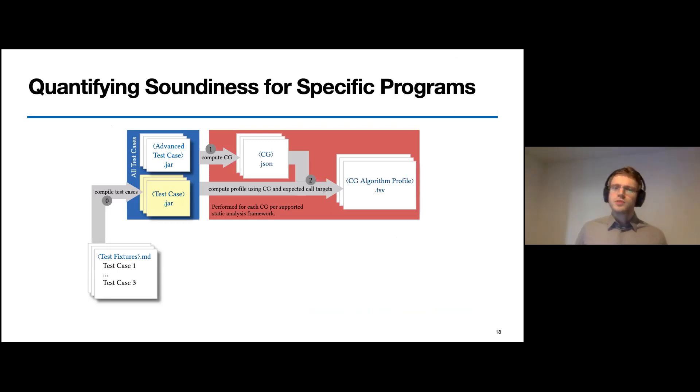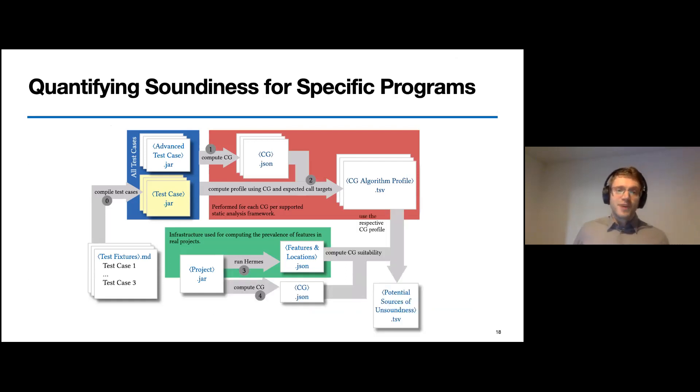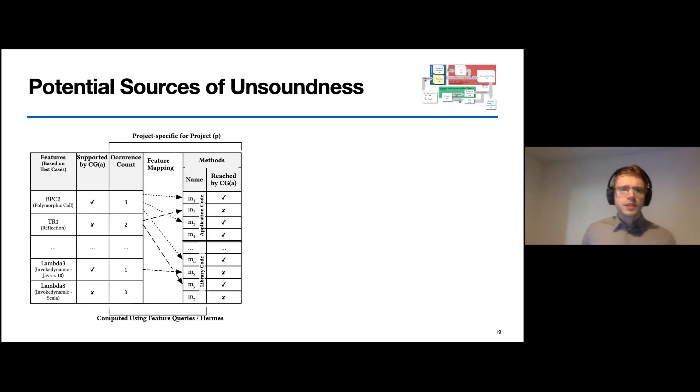Now, as we have the means to document a call graph algorithm's capabilities, and we are also able to find those features in arbitrary programs, we can finally combine these pieces of information and try to quantify a call graph's soundness in a project-specific manner. Let's see how we can achieve this. Using the algorithm's profile and the locations of the tested features, we can identify problematic call sites. On the left-hand side of the figure, you can see the algorithm's fingerprint. It contains all features and whether they are supported by a specific call graph algorithm that we use to analyze the project. On the right-hand side, you can see information that is extracted by Hermes. This part shows how often a specific feature occurs in the program, and where and in which method it can be found. When we finally combine this information with the computed call graphs, we now know if the feature location is reachable within the call graph or not.